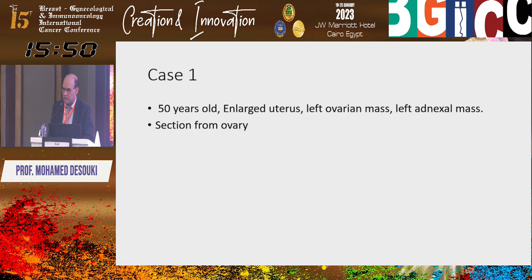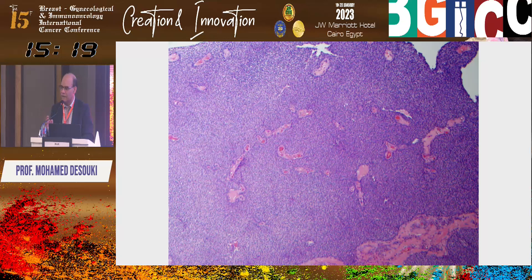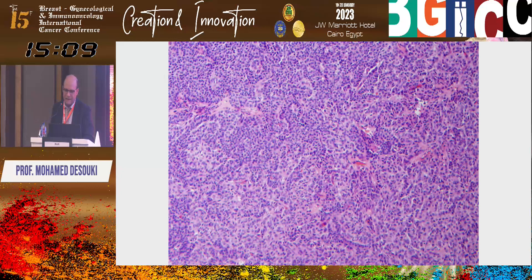Moving to the second PowerPoint: case number seven, 50-year-old with enlarged uterus and left ovarian mass. Section from ovary shows diffuse growth pattern of blue round cells. Going close-up, most of the cells are forming tubule-like structures. The main features are blue round cells — small cell tumors. There are some structures with a space and proliferation around the space.